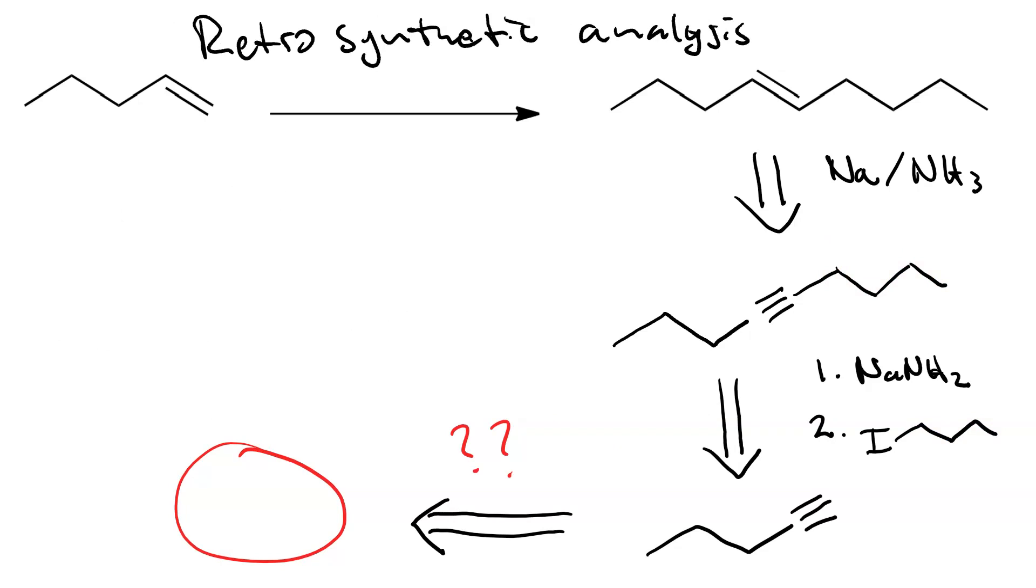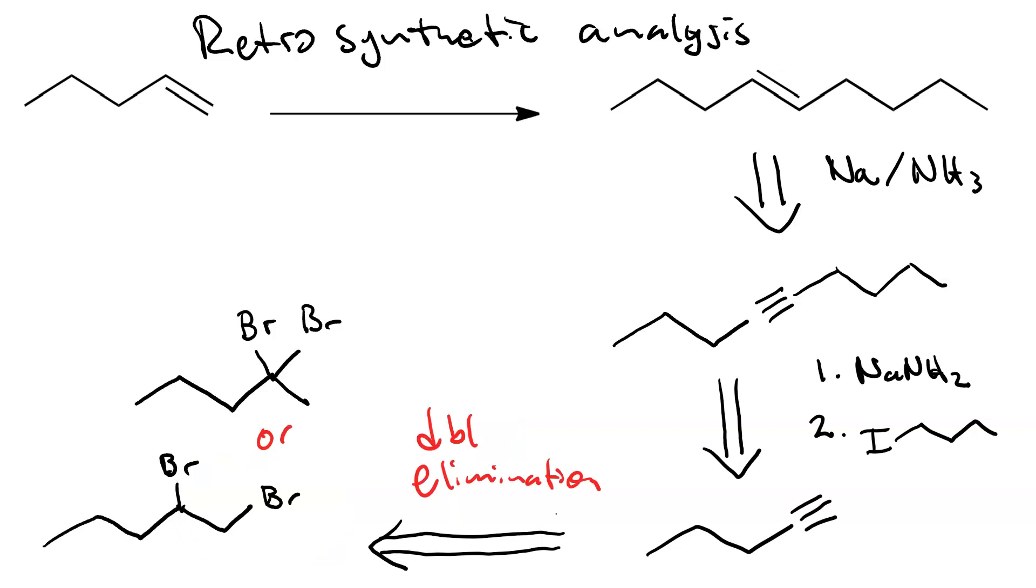What is the precursor and what set of reagents would get us a terminal alkyne? We can go from either a geminal alkyl dihalide, where the two halogens are attached to the same carbon, or a vicinal alkyl dihalide, where the two halogens are attached to neighboring carbons, and do a double elimination reaction to get to the alkyne. The reagents we use to do the double elimination in high yield is first excess sodium amide.